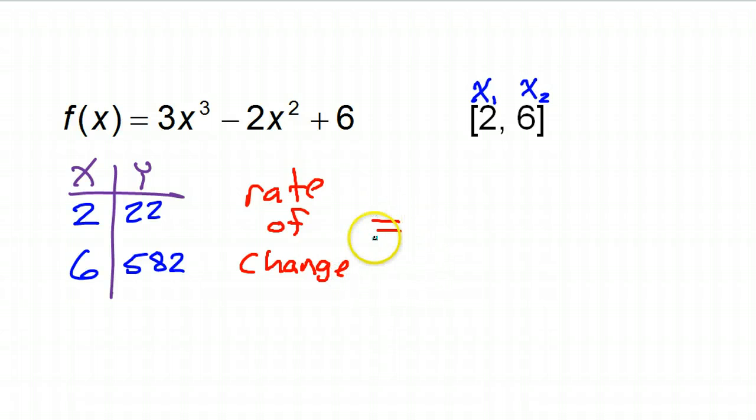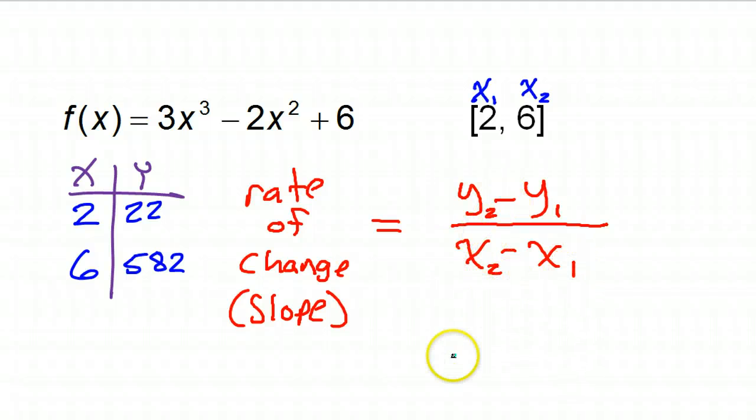So the rate of change. All right, the rate of change is just the slope. Okay, and the slope is y minus y over x minus x. Okay, y minus y over x minus x. So that means we're dealing with y minus y. So 582 minus 22. Okay, y minus y. Over x minus x. So 6 minus 2.